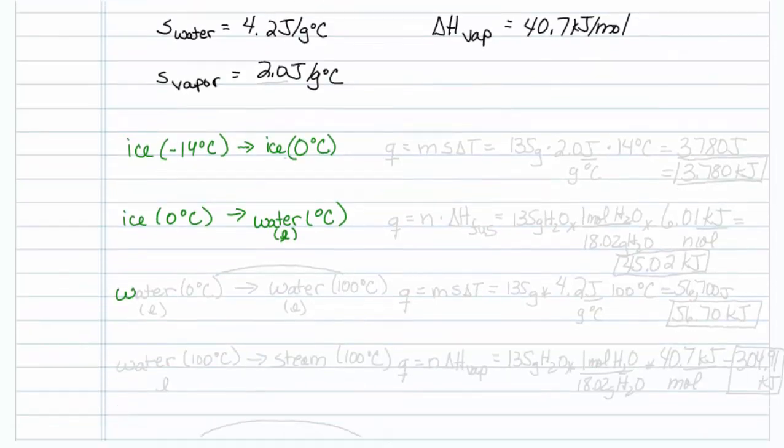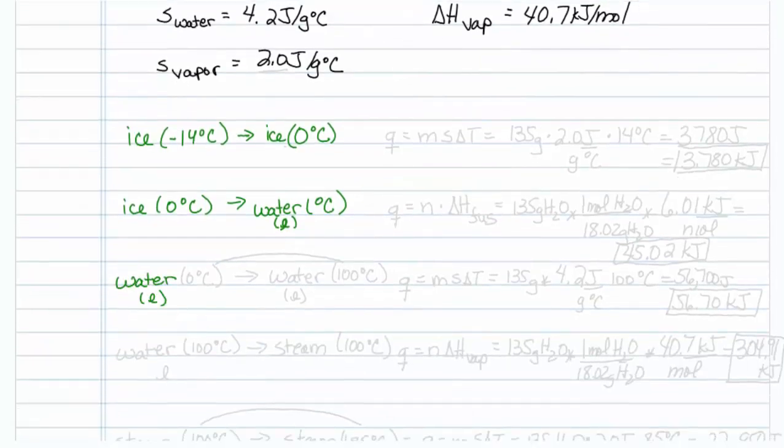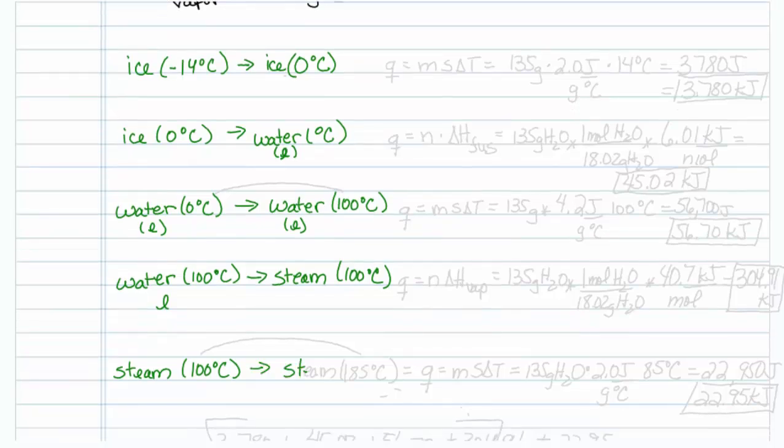Then we need to take water in the liquid state at 0 degrees Celsius and get it up to water in the liquid state at 100 degrees Celsius. Finally, we need to do another phase change. So this would be water at 100 degrees Celsius in the liquid state, and we need to convert it to steam at 100 degrees Celsius. Now we're finally to steam. Now we just need to take steam at 100 degrees Celsius and convert it to steam at 185 degrees Celsius. Those are all the steps that we need to do, so it's five separate problems.